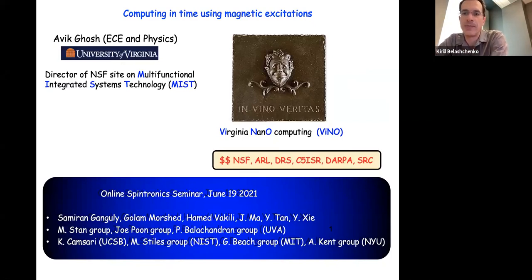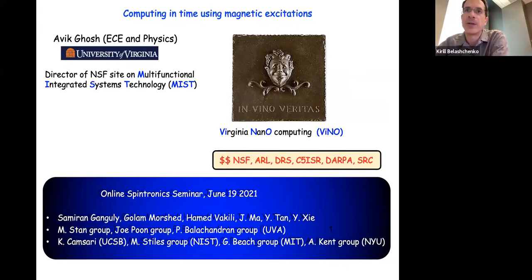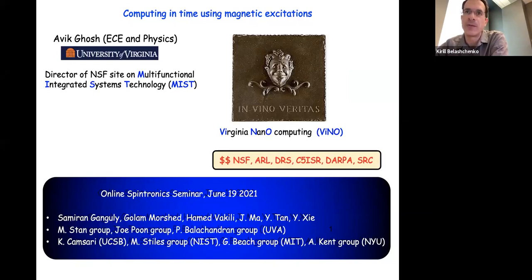Welcome to seminar number 70. The speaker today is Professor Avik Ghosh from the University of Virginia, and he'll talk about computing in time using magnetic excitations. Professor Ghosh is professor at the Charles Brown Department of Electrical and Computing Engineering and the Department of Physics at the University of Virginia. He did his PhD in condensed matter theory at the Ohio State University, and then held a postdoctoral fellowship in electrical engineering at Purdue. He is the University of Virginia Site Director of the NSF-IUCRC Center on Multifunctional Integrated Systems Technology, or MIST.